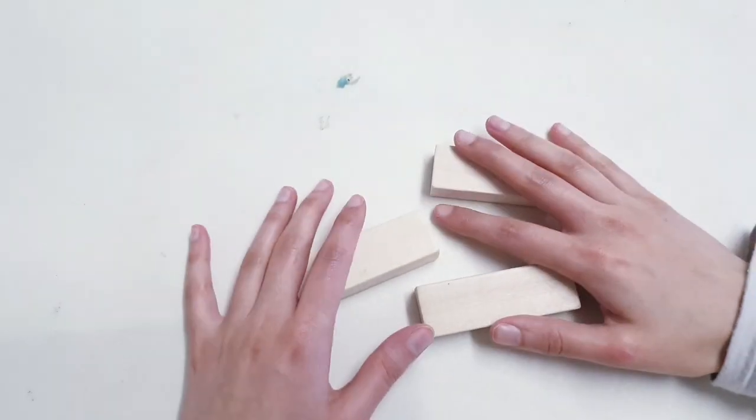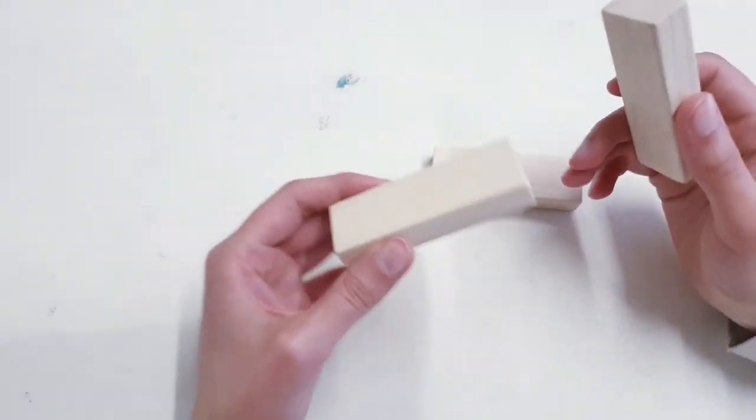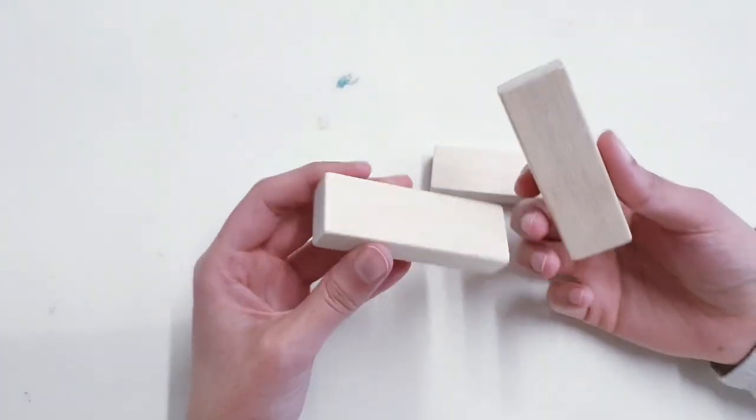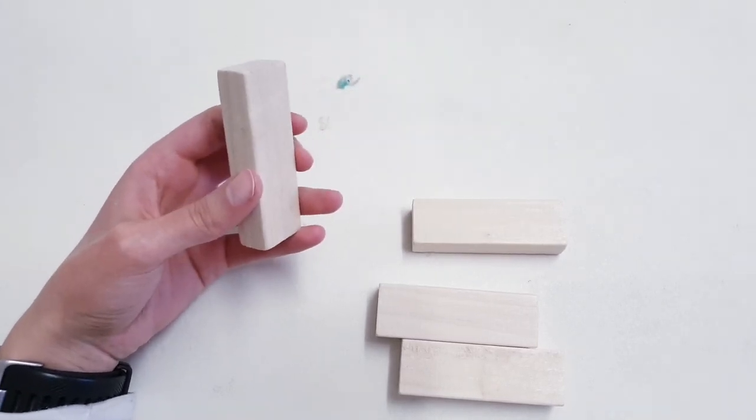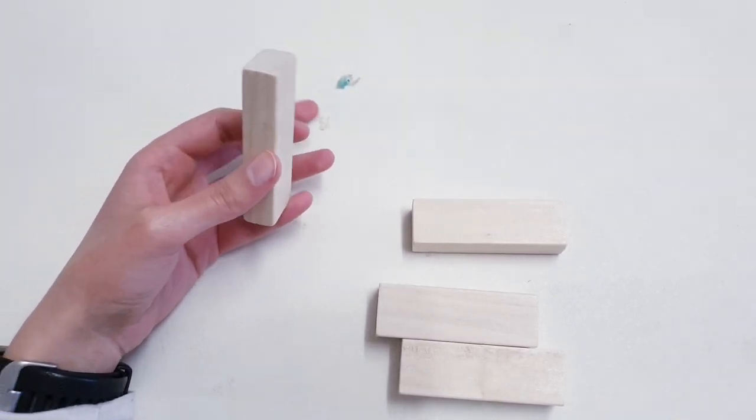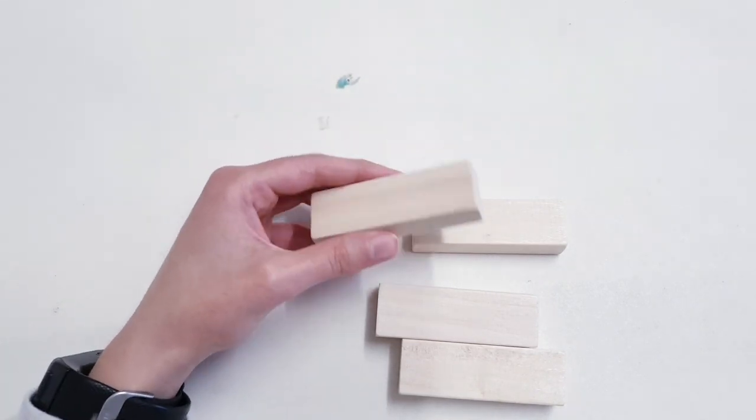Now while that dries, we're going to move on to something else just to make use of the time. You're going to need these tumble tower blocks, and we're going to stick them together again using a combination of E6000 and hot glue. But hot glue should be strong enough just for this.